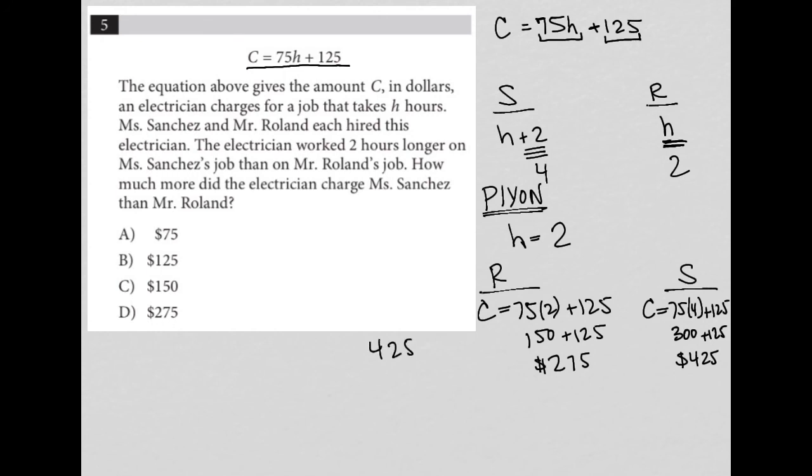So how much more was the charge? We just find the difference. 425 minus 275. Borrow from the tens place, and that gives us 150. So the answer is C.